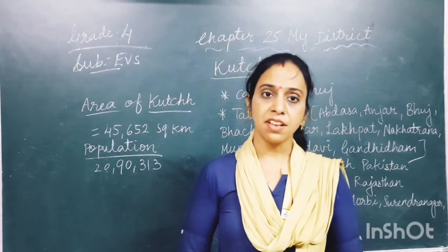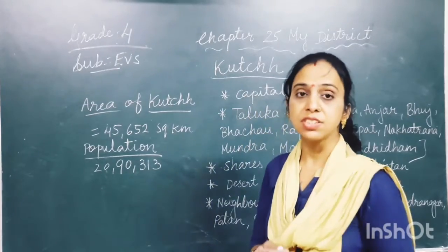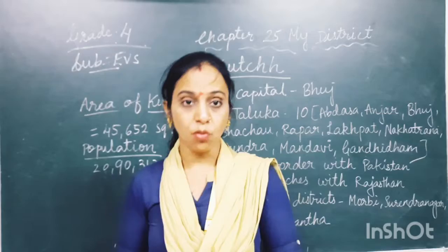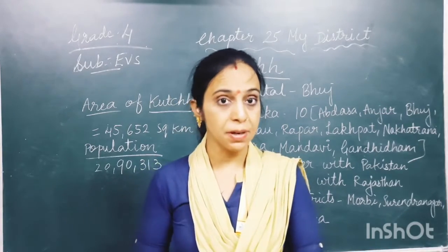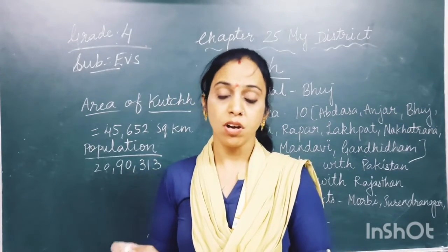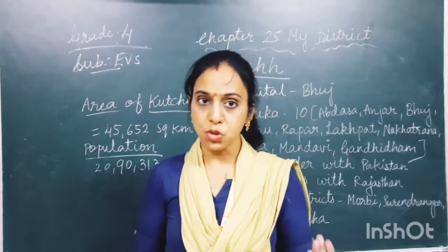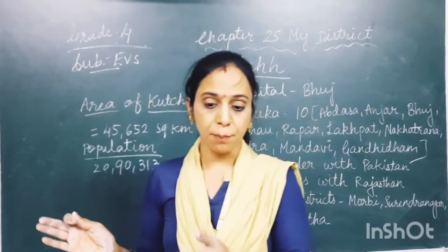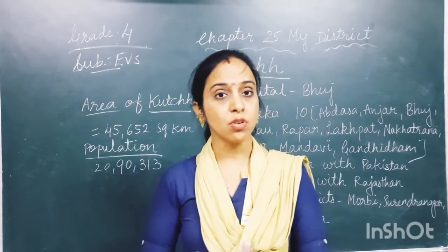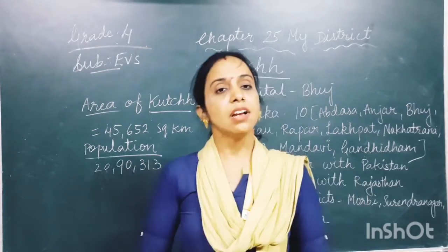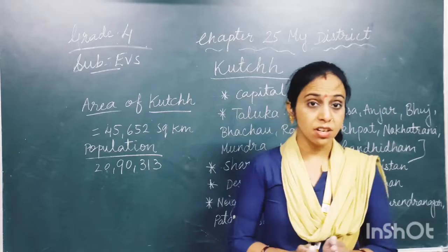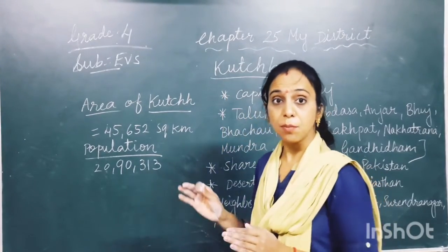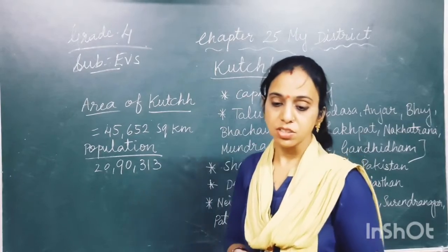There are some important sites and places in Kutch: Narayan Sarover, Madhav, Ashapura — these are pilgrimage centers. Ancient places like Dholavira and Rappar are also situated there. Some ports in Kutch include Kandla, Madhvi, Mundra, and Jakob.